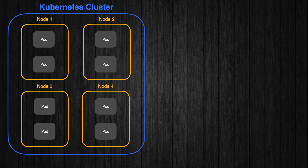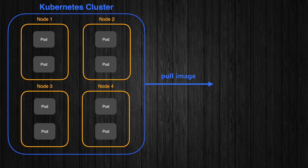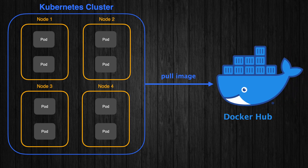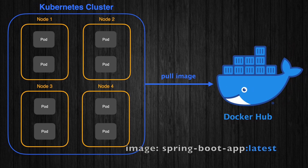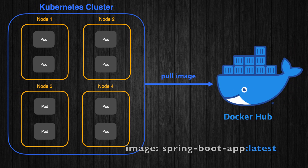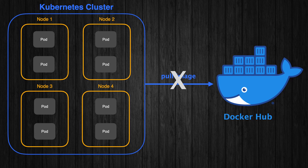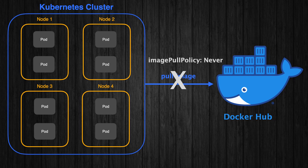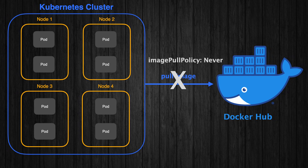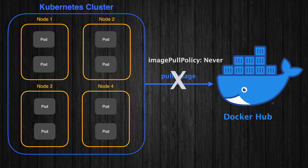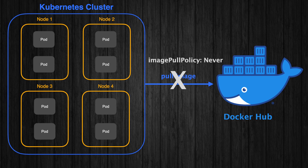Here is why. By default, Kubernetes may try to pull the image from an external registry like Docker Hub, especially if the image tag is :latest. You can override this behavior by setting the imagePullPolicy to Never, which will force Kubernetes to use the local image instead of trying to pull it from a remote registry.